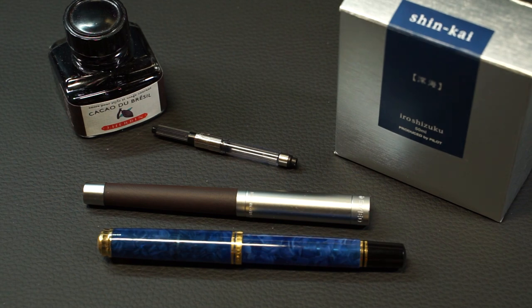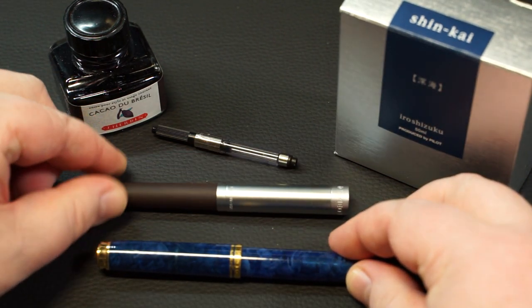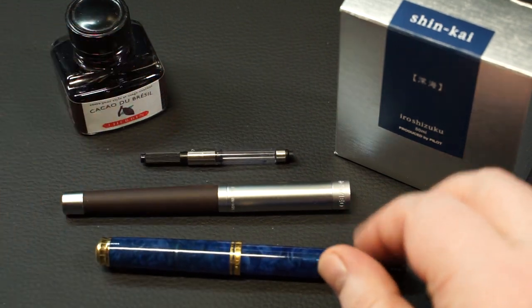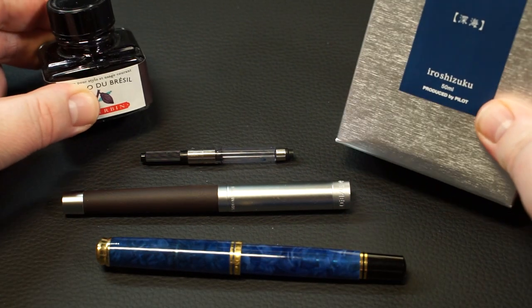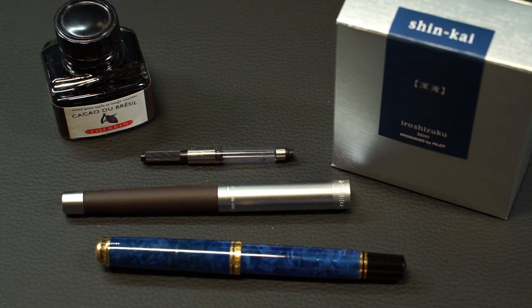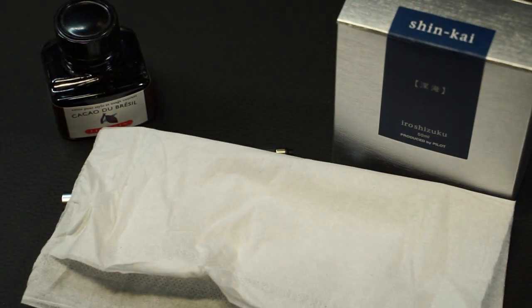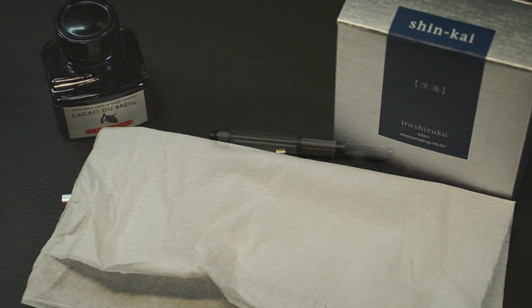First of all, what you will need: the fountain pen. In this case, one sub-piston fountain pen and a cartridge fountain pen with ink converter. Plus, of course, the ink in the inkwell. And I always recommend having a soft cloth ready to clean the pen. Personally, I like to use dry cosmetic wipes, but kitchen paper towels are also good to use.